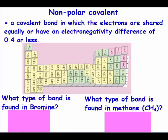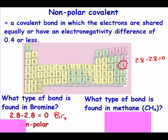Below is our electronegativity chart, and it asks what type of bond is found in bromine. Bromine's formula is Br2. So Br minus Br, 2.8 minus 2.8, gives me an electronegativity difference of 0. Therefore, that would be a non-polar covalent bond.